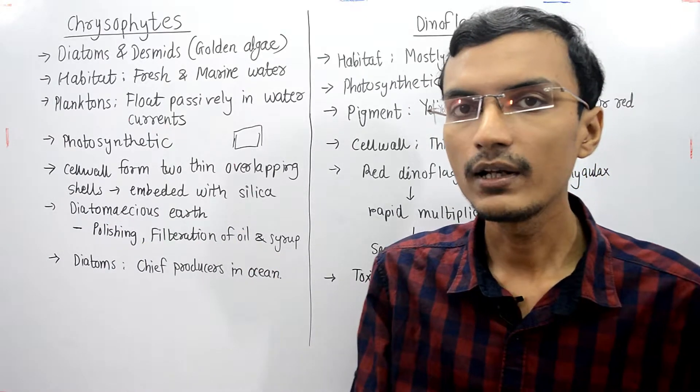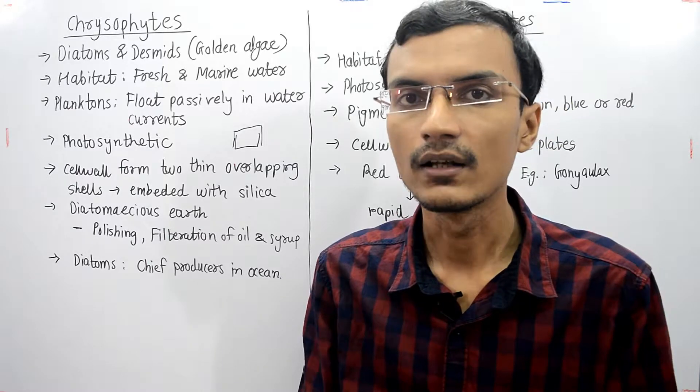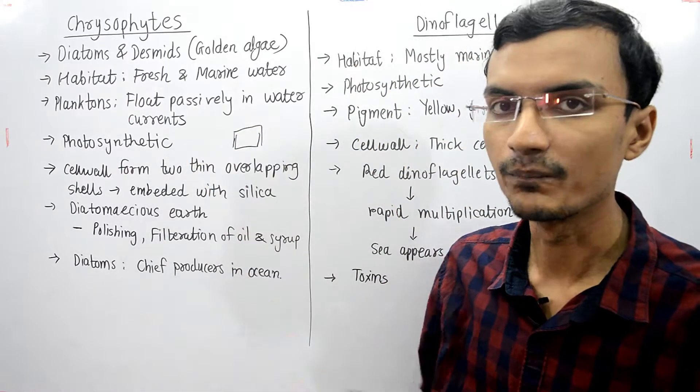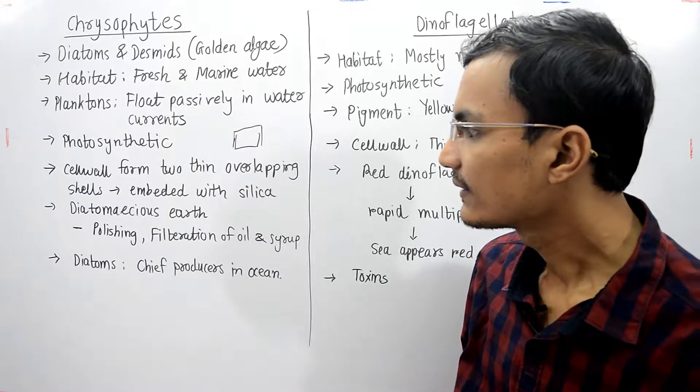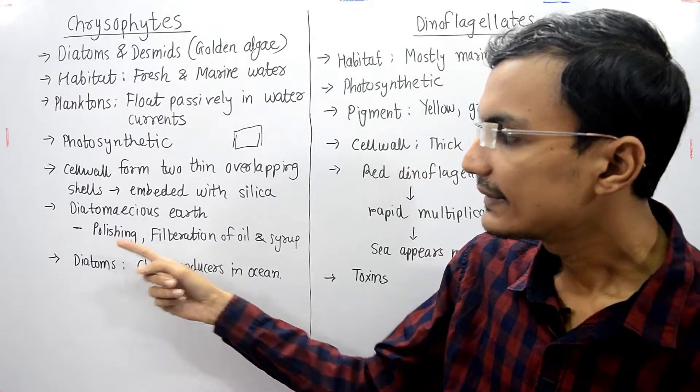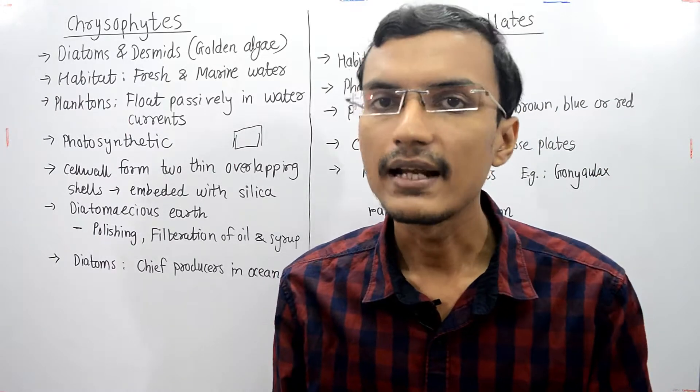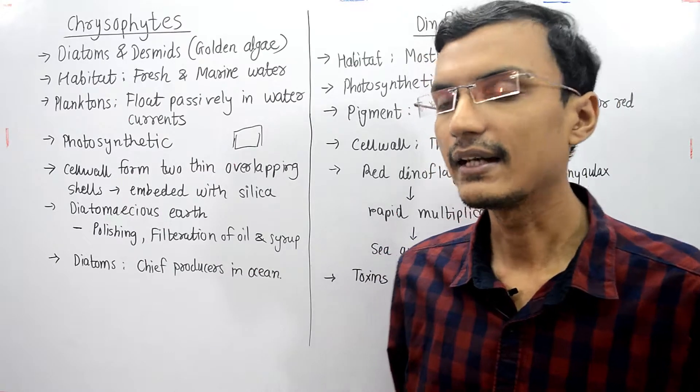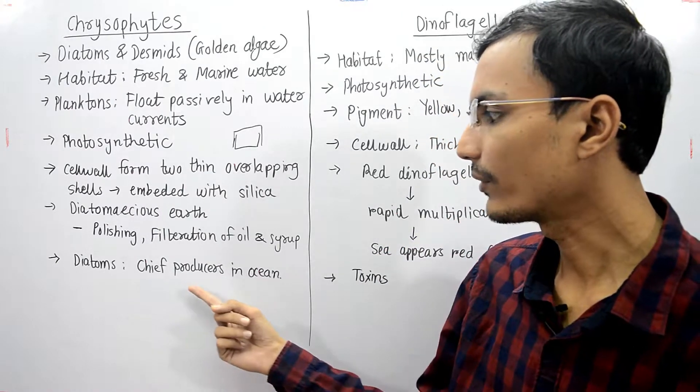Diatomaceous earth is the accumulation of cell wall deposits over billions of years. It is used in polishing and filtration of oils and syrups.